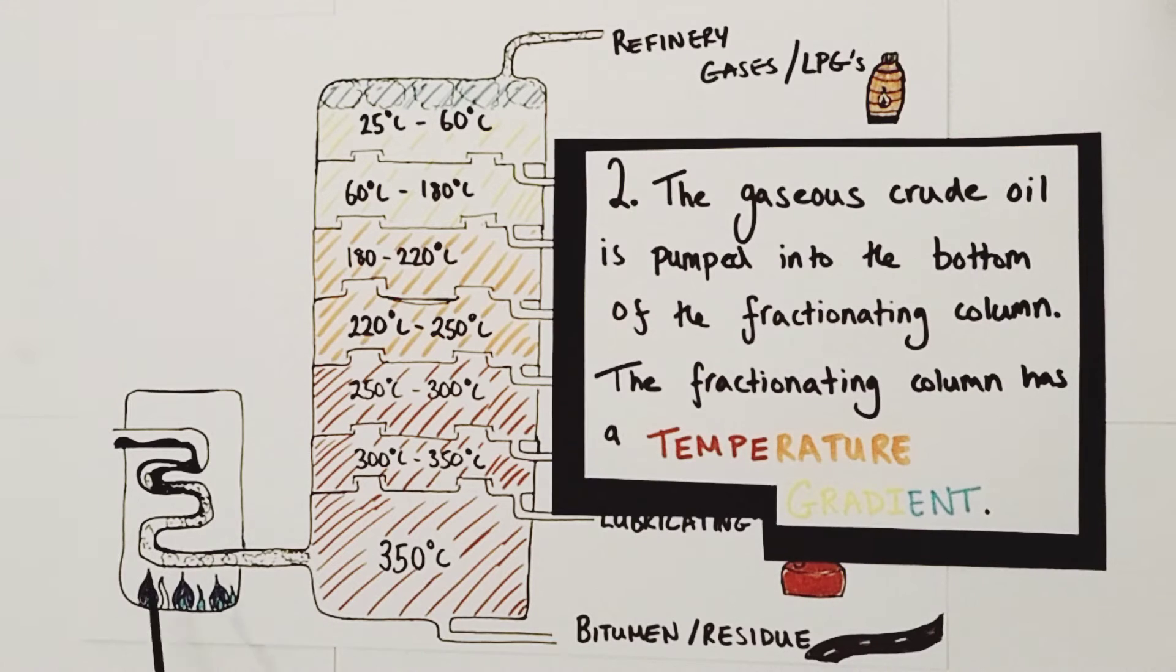Next, the gaseous crude oil is pumped into the bottom of the massive fractionating column. You may have noticed there's a color difference up the column, from red to orange to yellow to blue. That's emphasizing there is a temperature gradient. The bottom is maintained at the highest temperature while the top is at the lowest, with temperatures slowly decreasing as we rise up the column. That's really important for the separation process.